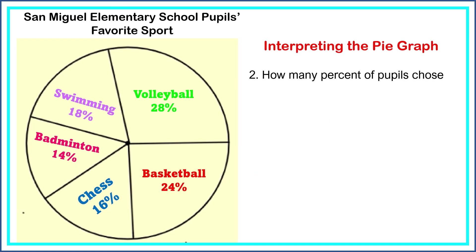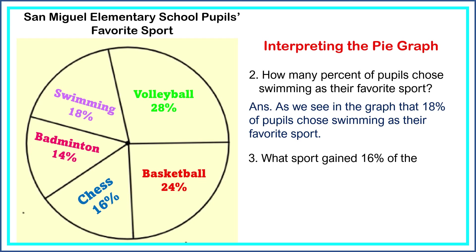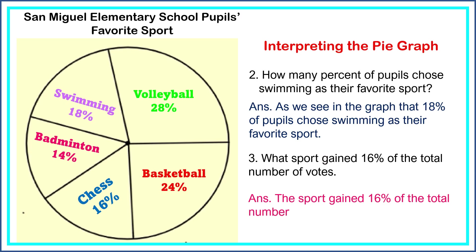Next question: How many percent of pupils chose swimming as their favorite sport? As we see in the graph, 18% of pupils chose swimming as their favorite sport. Another question: What sport gained 16% of the total number of votes? The sport that gained 16% of the total number of votes is chess.